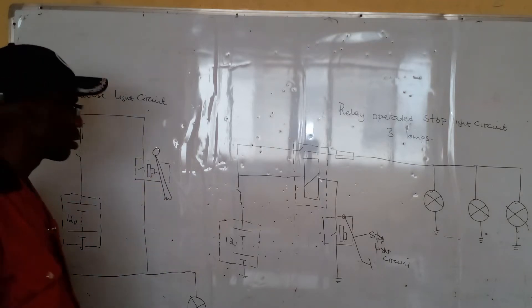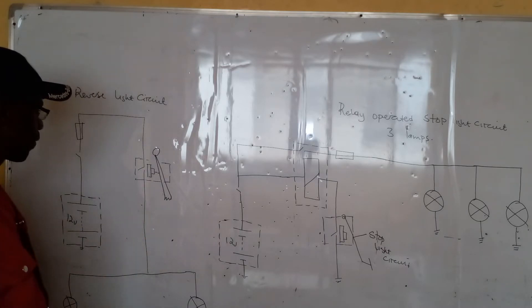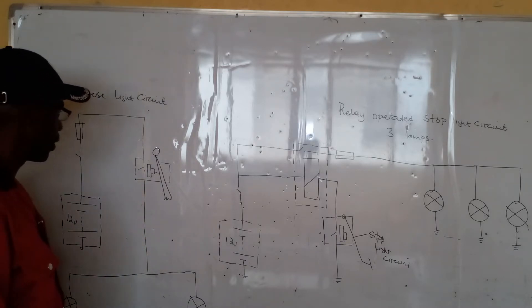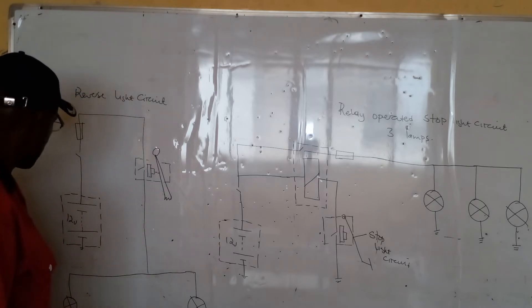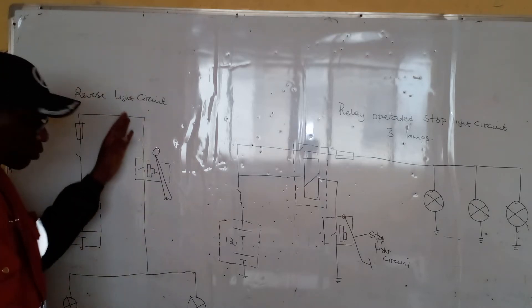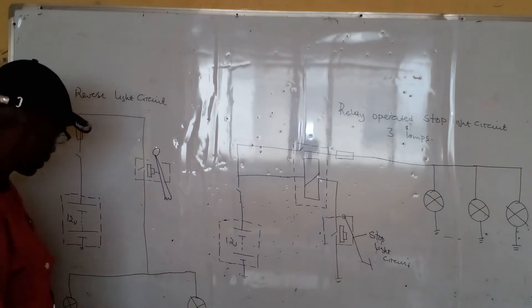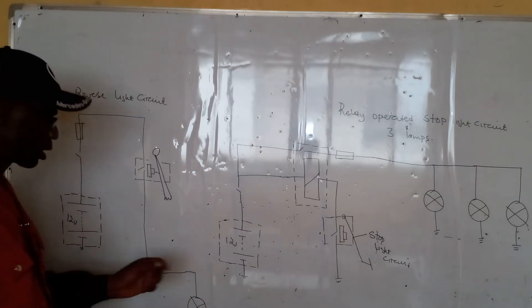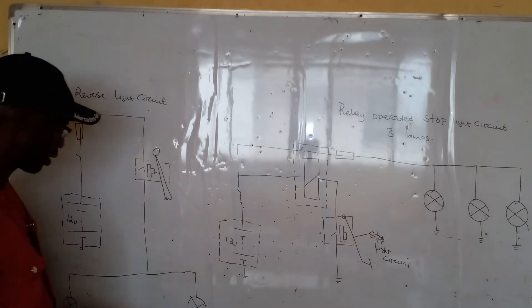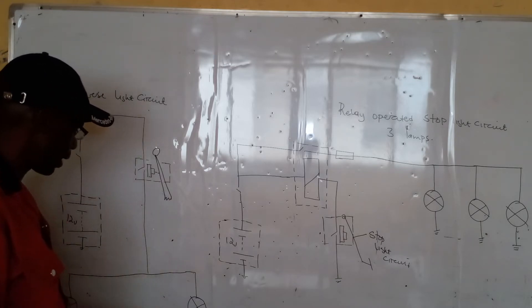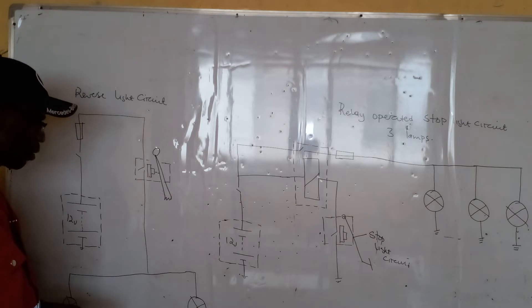which will connect the lamps as soon as the driver engages the vehicle into reverse gear. Current can now flow to the lamps, and they will shine a white light, which is a well-recognized signal by all drivers that the vehicle is now moving backwards.